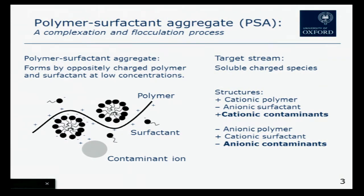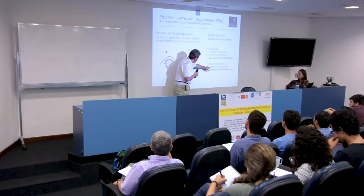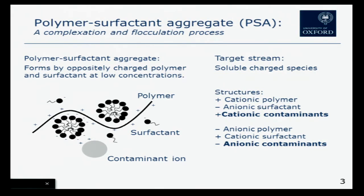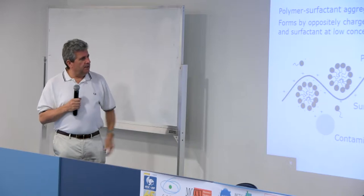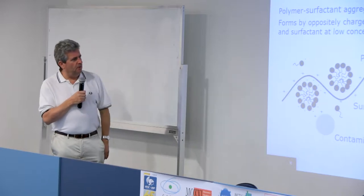If we want to do this in reverse because we have anionic species — for example ferrocyanide, which contains iron and a cyanide group with a negative charge — then we need a cationic surfactant and an anionic polymer: a sandwich in reverse. But the idea is exactly the same.